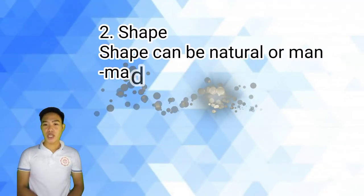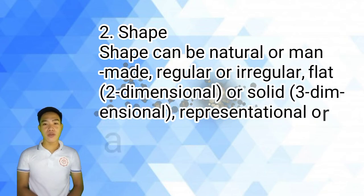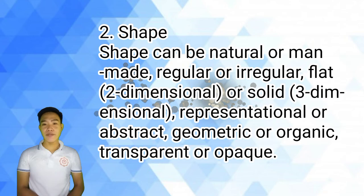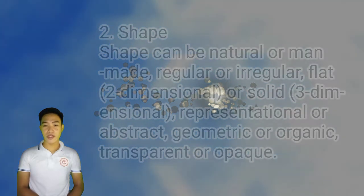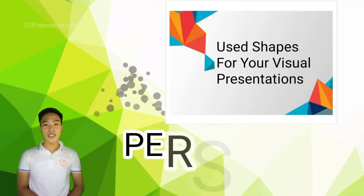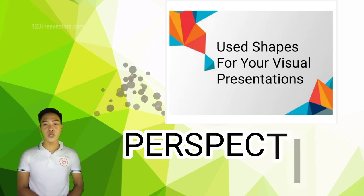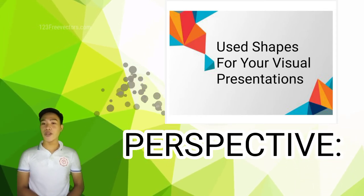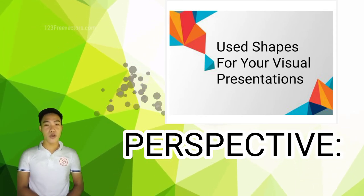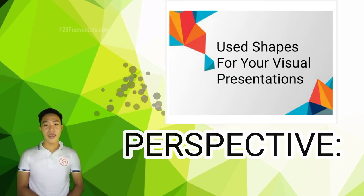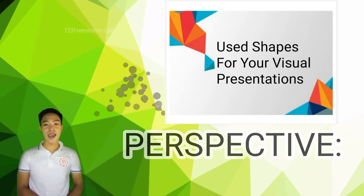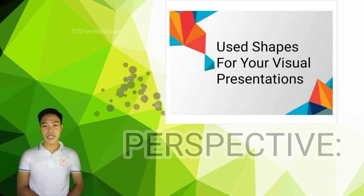Number two is shape. Shape can be natural or man-made, regular or irregular, flat 2D or solid 3D, representational or abstract, geometric or organic, transparent or opaque. Shape is an important element in designing visuals because it leads to a design that resonates with the target audience while inspiring trust and confidence. Shapes influence how viewers or learners perceive and react.